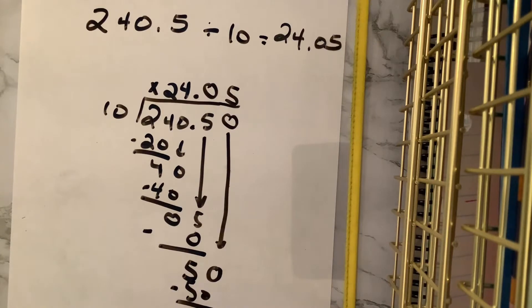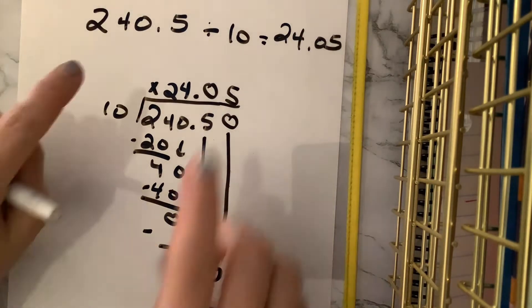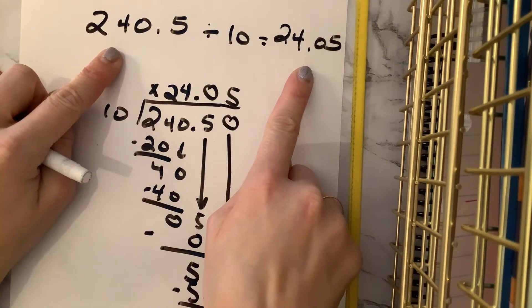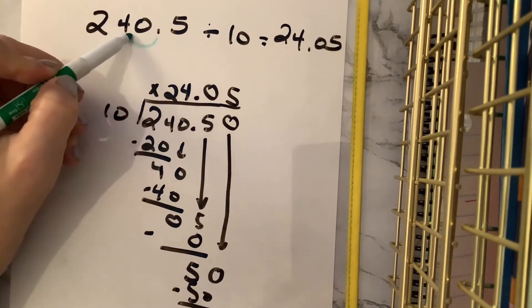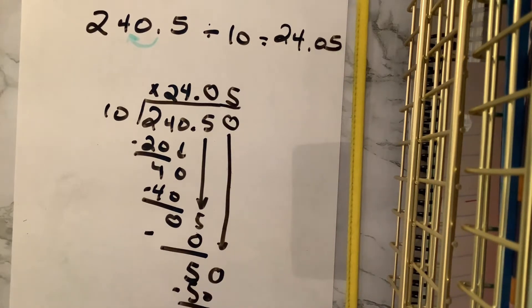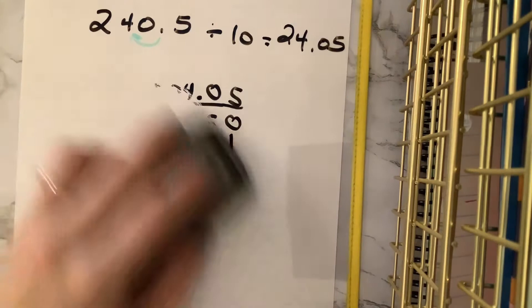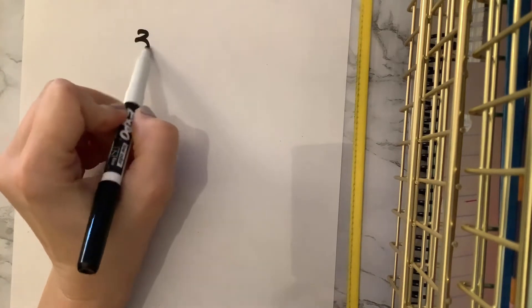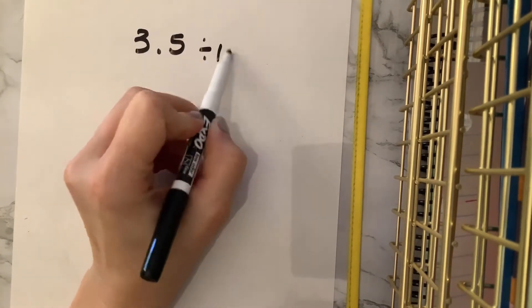So as we look at these, we see that 240 and 5 tenths divided by 10 equals 24 and 5 hundredths. Do you notice anything comparing these two? It looks like we moved that decimal point one space to the left. Was anybody thinking that? If we divide by 10, we go one space to the left — should we try another one and see if that proves to be true? What if we do 3 and 5 tenths divided by 10?